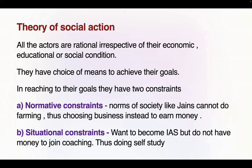While you pursue your goals, you primarily have two constraints — two roadblocks. One is normative: every society has norms about what should and should not be done. For example, if you belong to the Jain community, you cannot earn money through agriculture — this is a normative constraint. The second is situational constraint, pertaining to circumstances. You may want to become an IAS officer, but without a sound economic background, you cannot afford coaching fees, so you resort to self-study. Your goal is the same, but you have changed your means to achieve it.